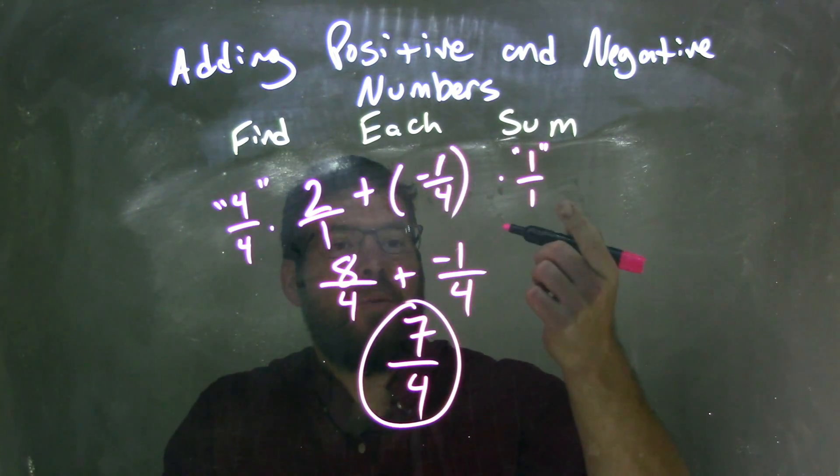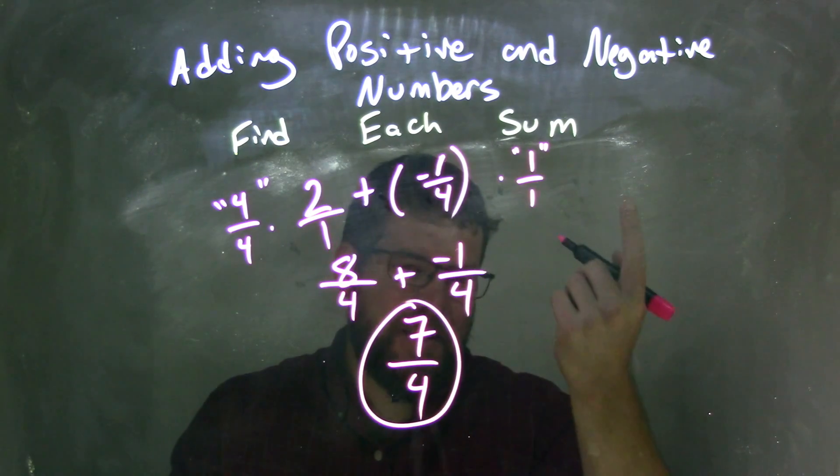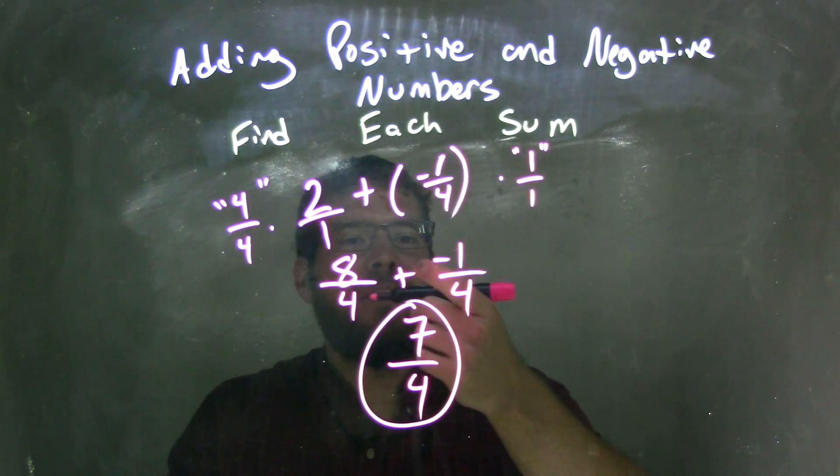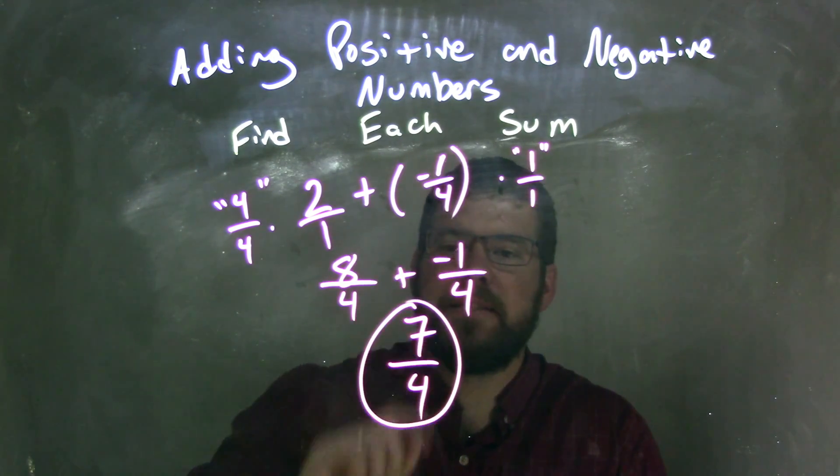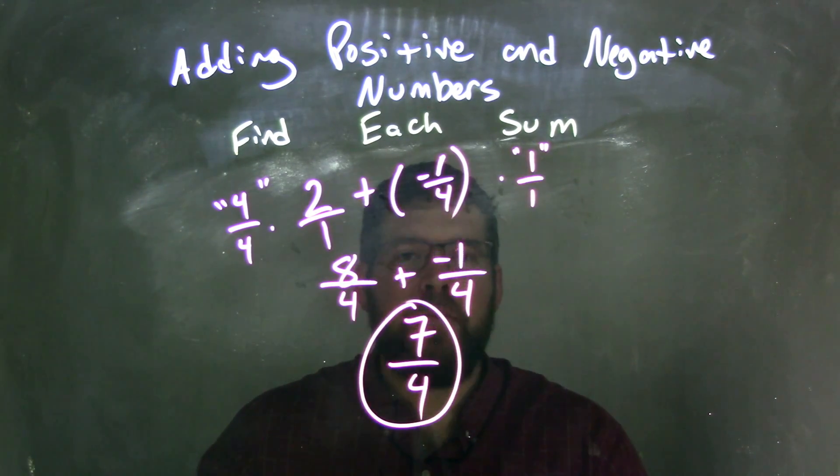Negative 1 fourth times 1 over 1, and you can skip that step in the future, it's negative 1 fourth. And we add that together. The base is the same as 4. 8 plus a negative 1 is 7. And so our final answer is 7 fourths.